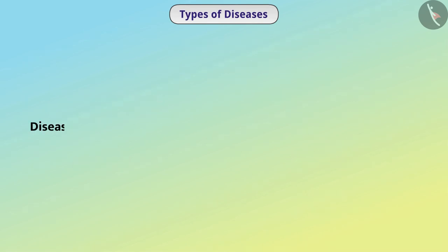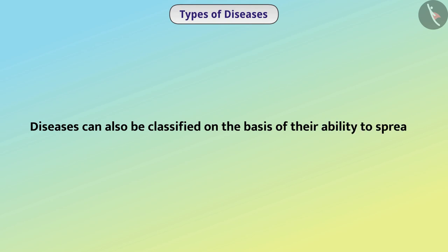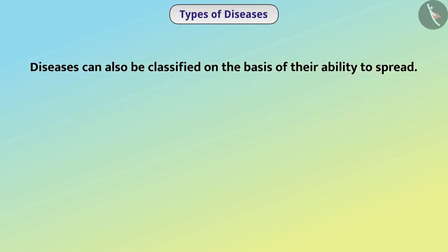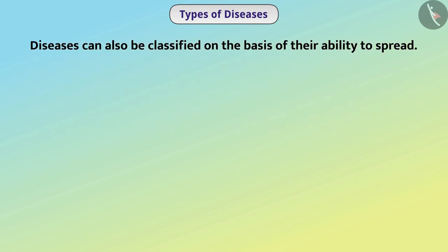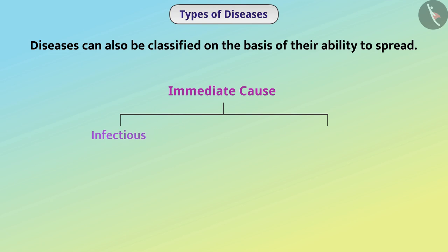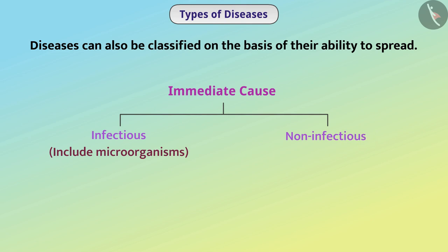Diseases can also be classified on the basis of their ability to spread. In the previous video, we learned that the immediate cause of disease can be infectious, which includes microorganisms, or non-infectious, which does not include microorganisms.